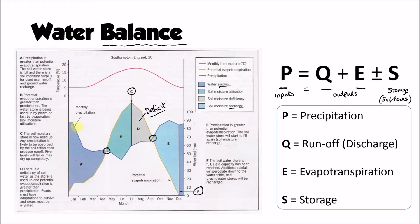A helpful analogy: think of this like your mobile phone battery. You start the day with a full battery, use it up throughout the day until it's empty, then plug it in and charge it back up until it's full again. That's exactly what's happening here. In a typical UK year, depending on precipitation, the stage of deficit doesn't always occur — the UK is wet enough that in most years it might not happen, though in drier parts of the world, deficit can last for a significant period.